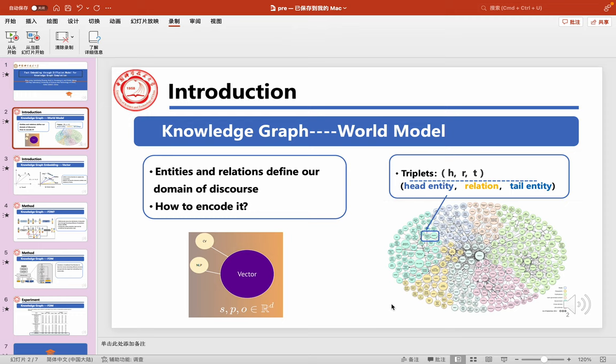First, Knowledge Graph is a world model. It consists of lots of triplets. Each triplet has head entities, relation, and tail entities. Entities and relations define our domain of discourse, but how to encode them is a problem.